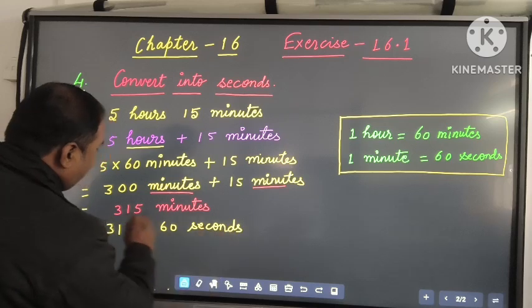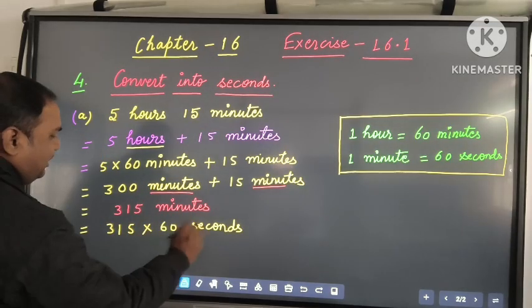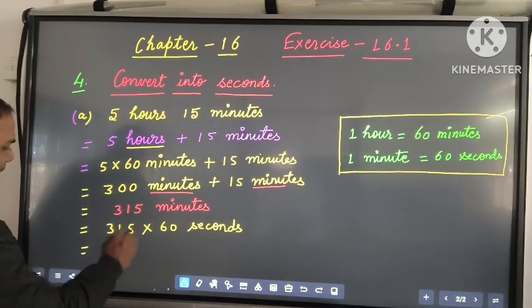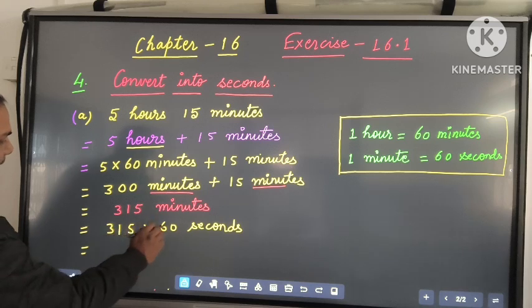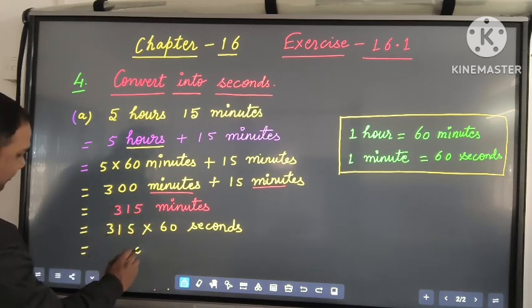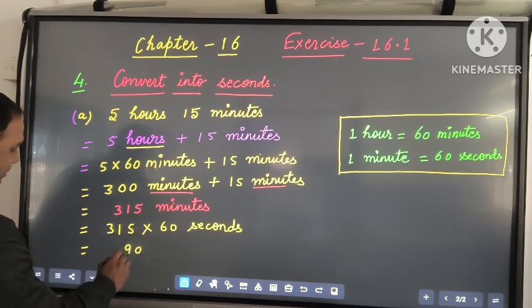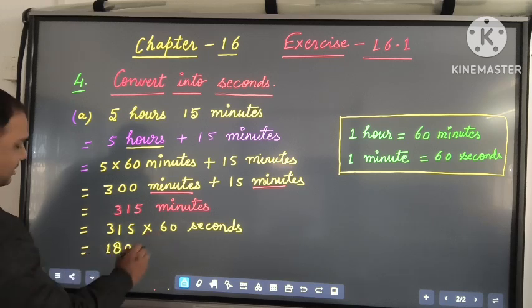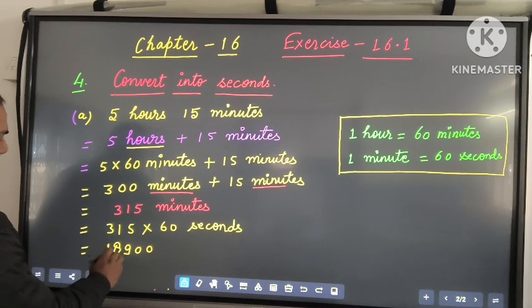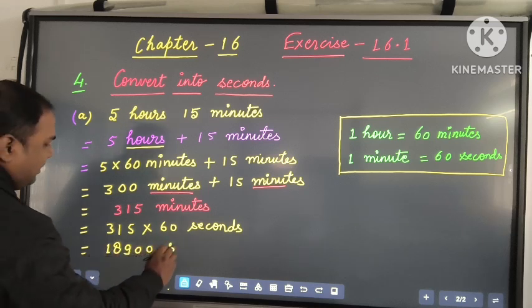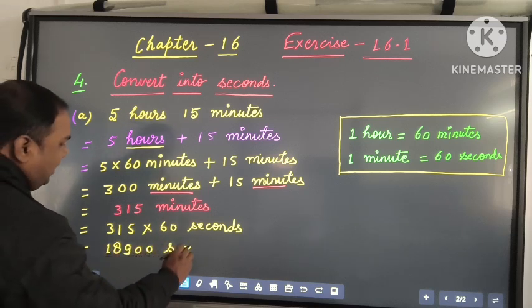Now, 315 minutes converted into seconds: when you multiply 315 by 60, you get 18,900. So 18,900 seconds is the answer.